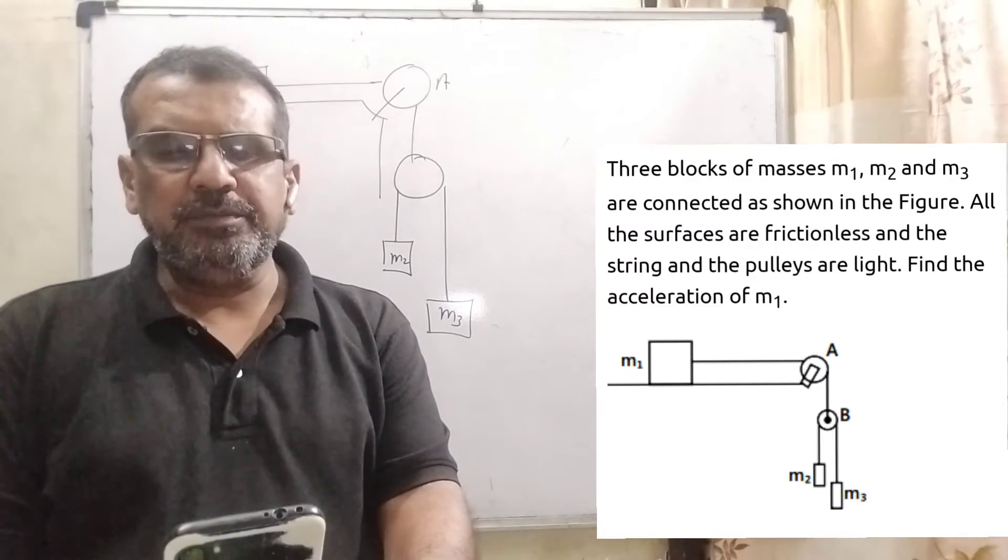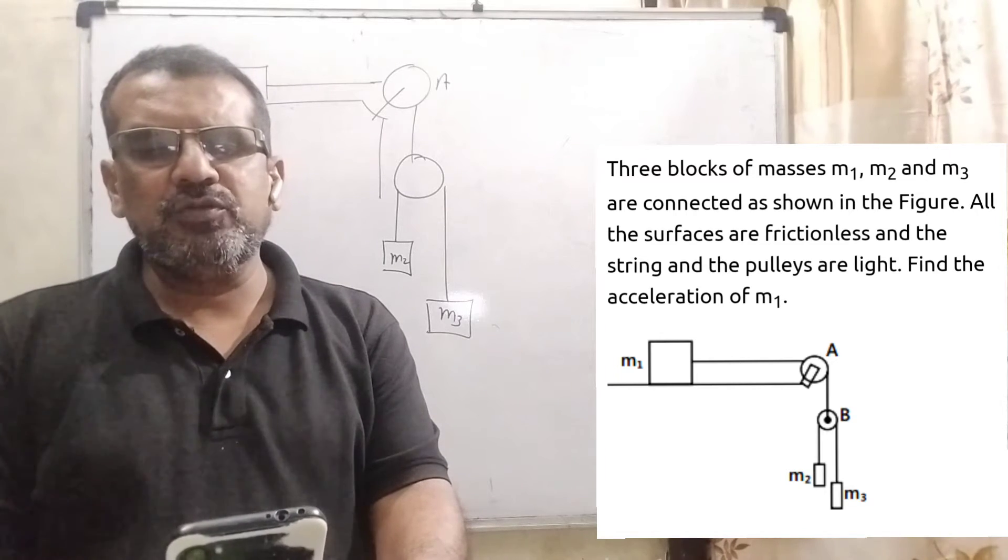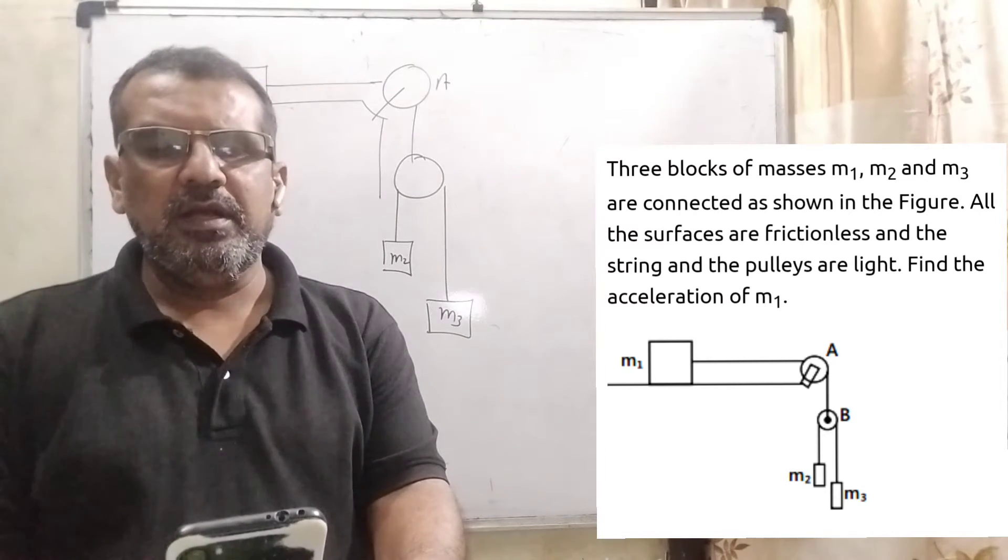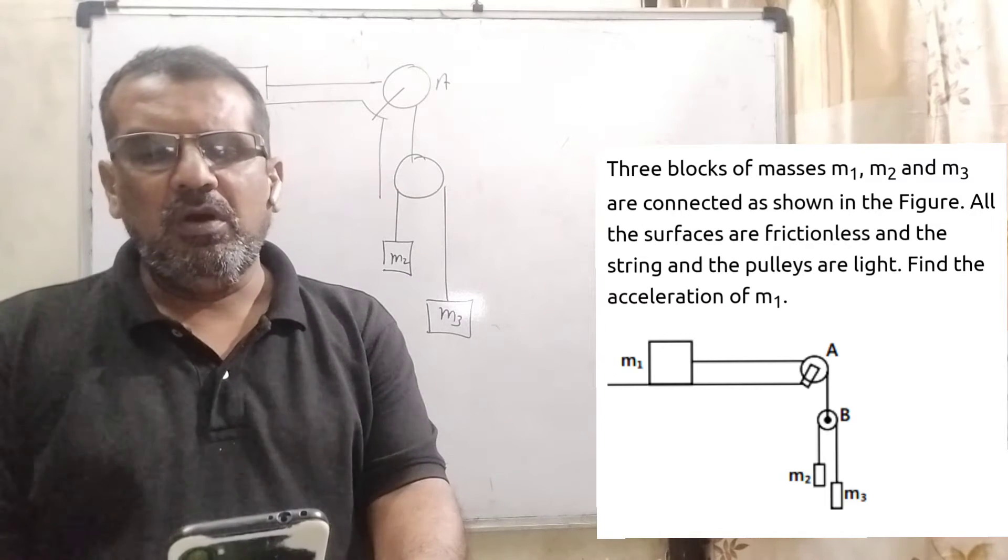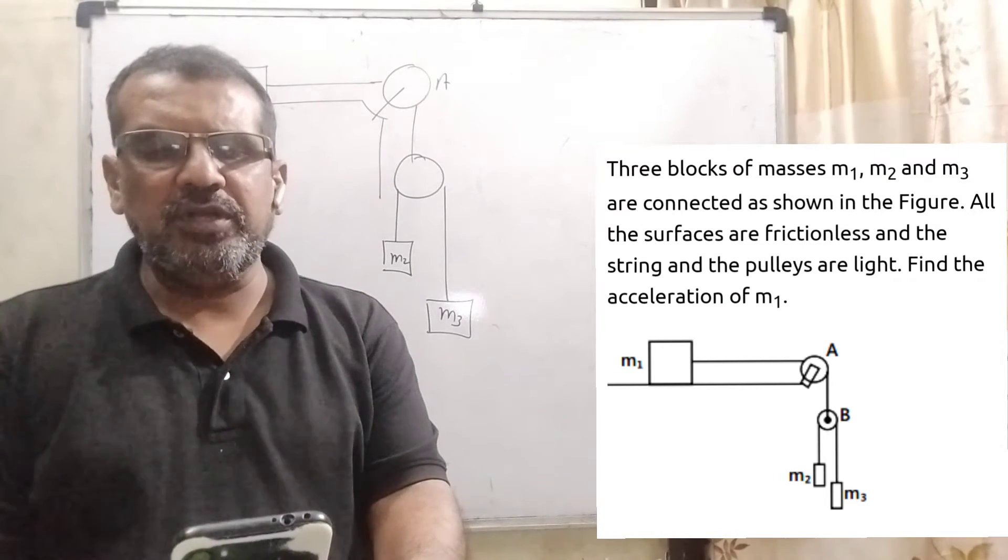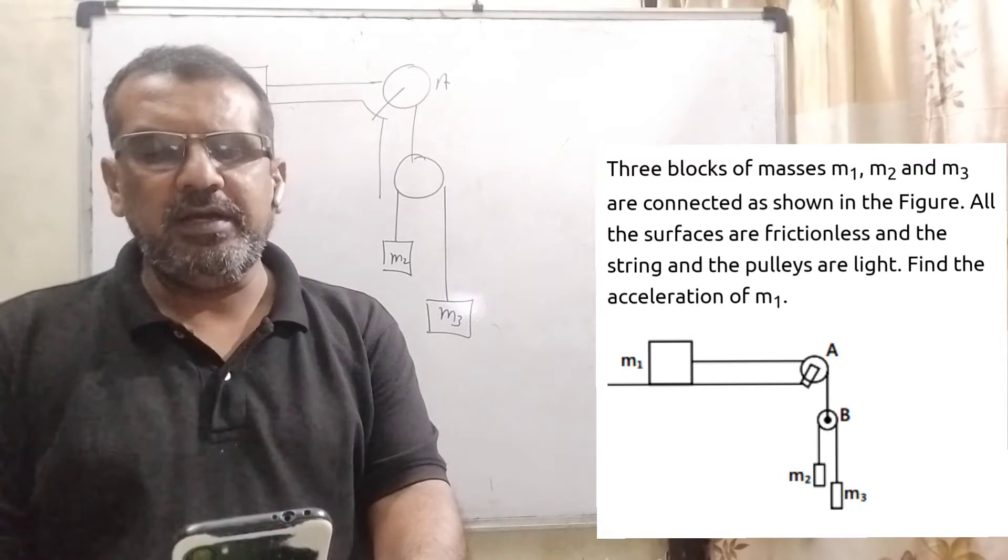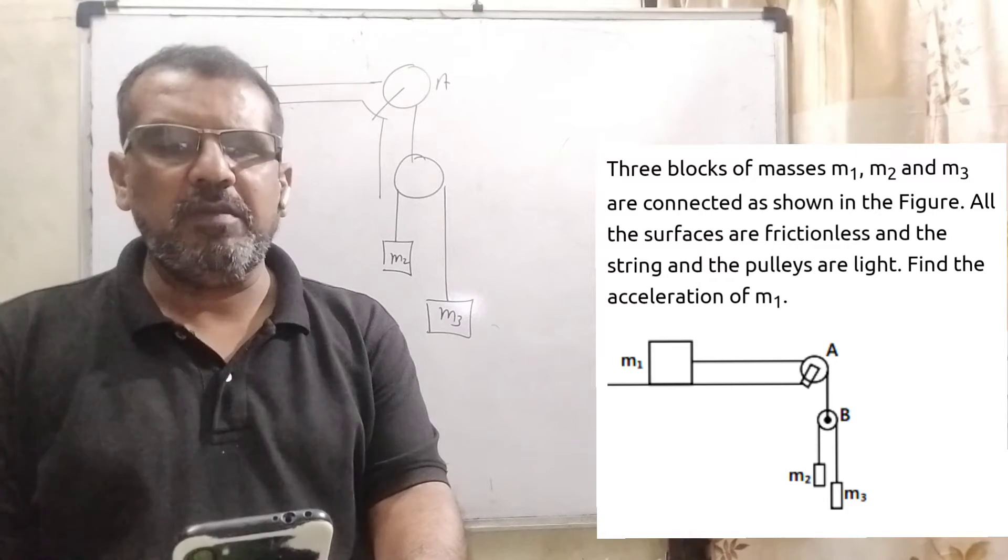Now here is the question. Three blocks of masses M1, M2 and M3 are connected as shown in the figure. All the surfaces are frictionless and the string and the pulley are light. Find the acceleration of mass M1.